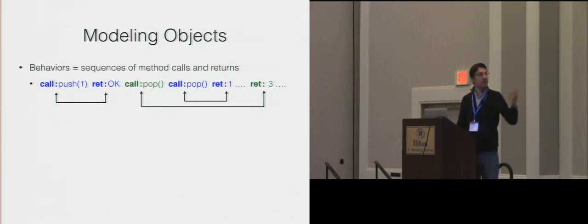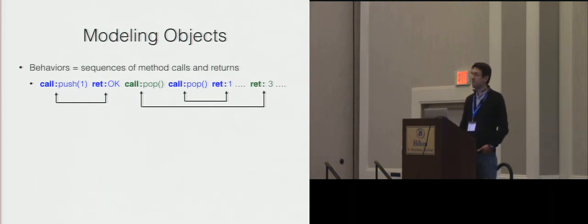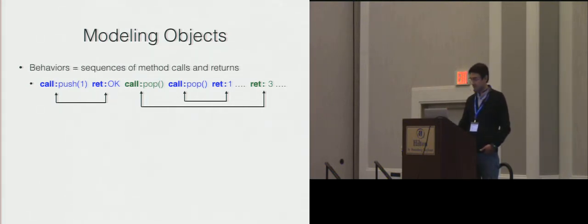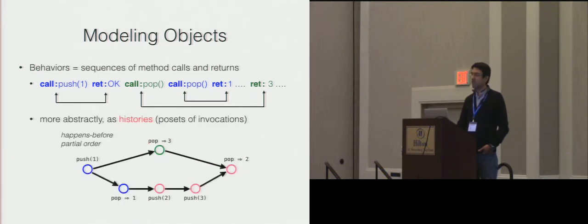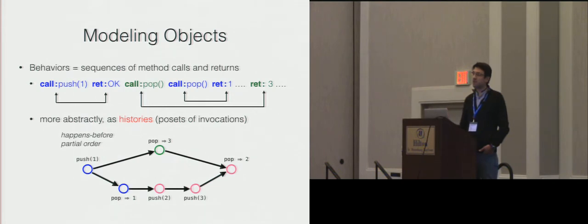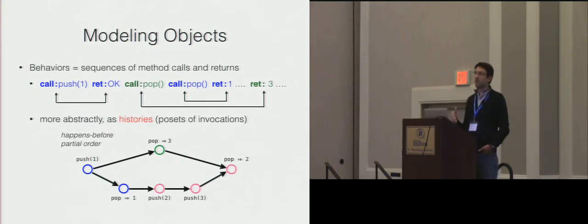Here I have an example of an execution where some methods are called from different threads, so in this example they will overlap in time. You see these two calls to pop — they overlap. Even more abstractly, we'll think of the object behaviors as histories, meaning as sets of invocations which are partially ordered by a happens-before relation.